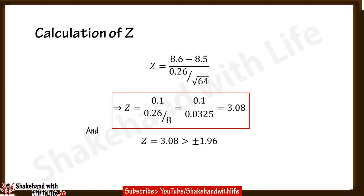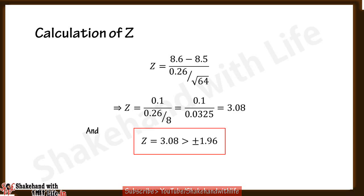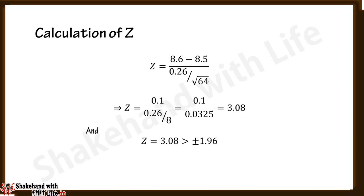The Z value of 3.08 is greater than the critical values of ±1.96, and hence the null hypothesis cannot be accepted for the given parameters — the null hypothesis is rejected.